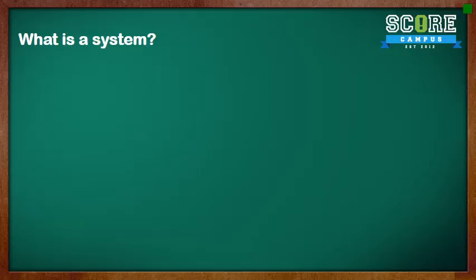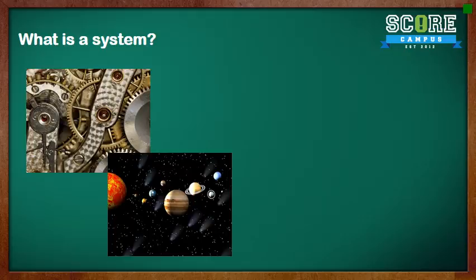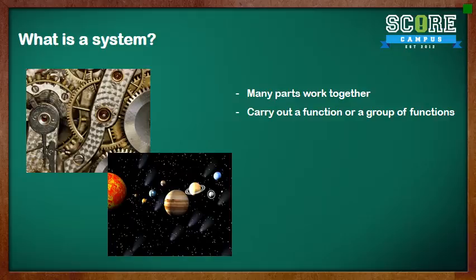Now starting off, what is a system? A system consists of many parts working together to carry out a function or a group of functions. Examples of systems include a solar system, your watch, your phone, remote control, television. These are all systems because they consist of many parts working together to make something else happen.